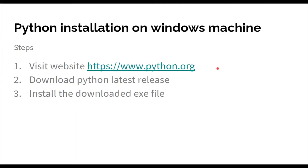Now, Python installation on a Windows machine. There are basically three steps to install Python on Windows. First, we need to visit the official website of Python, which is www.python.org. The second step is to download the latest Python release.